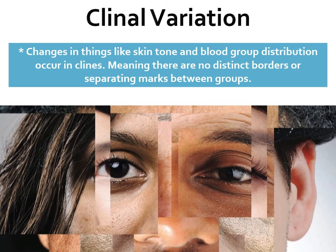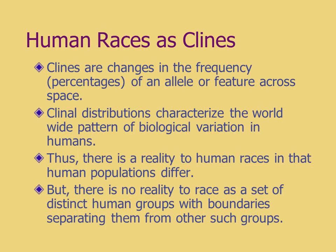What we refer to in anthropology as clinal variation — changes in things like skin tone or blood group distribution occur in clines, meaning there are no distinct borders or separating marks between groups. For example, skin tone: you can't walk from Africa to Europe and suddenly reach the land of white people — what you see is progressively lighter shades of skin tone as a response to lessened degrees of UV radiation. Clines are changes in the frequency or percentages of an allele or feature across space. Clinal distributions characterize the worldwide pattern of biological variation in humans. Thus there really is no reality to human races as distinct groups with boundaries — though there is a reality to race in terms of cultural concepts.